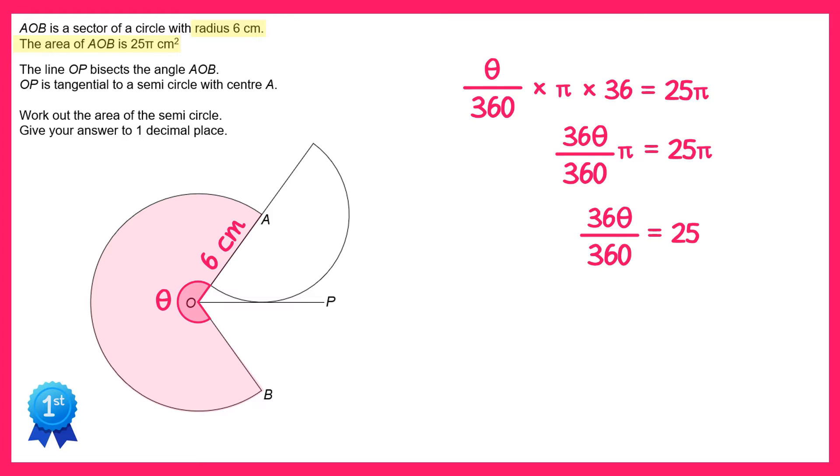On the left-hand side, 36 goes into 360 ten times, so that's just a tenth, so it's θ over 10 equals 25. If we times both sides by 10, then θ equals 25 times 10 which is 250 degrees. So we can add that to the diagram.